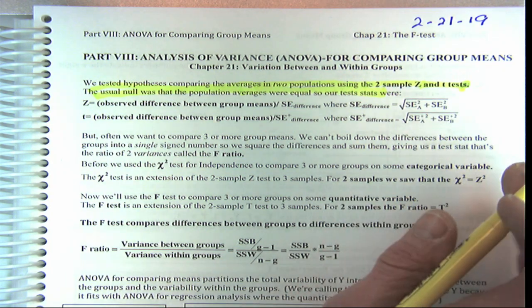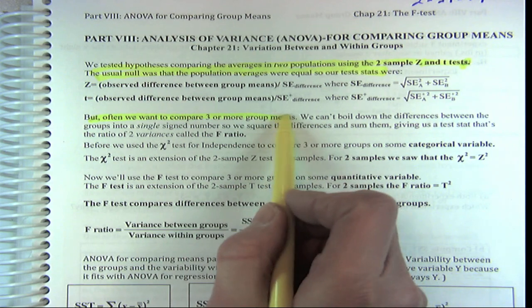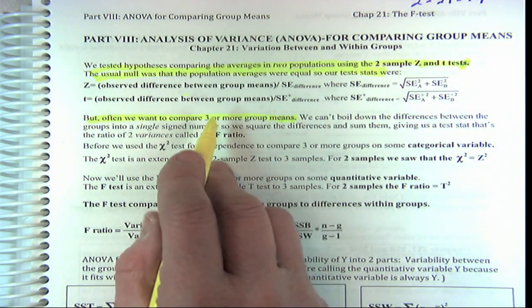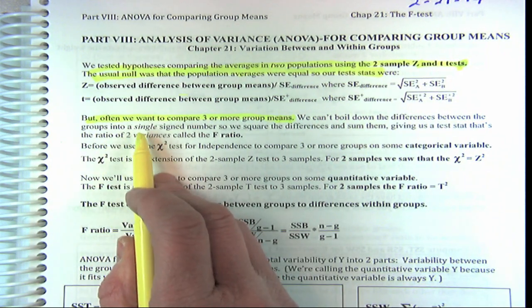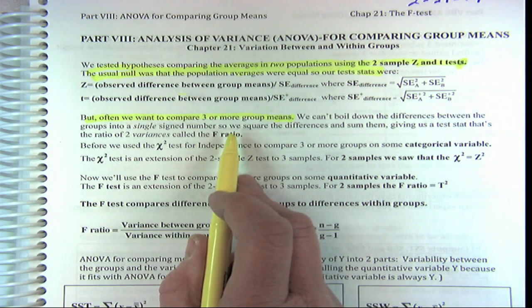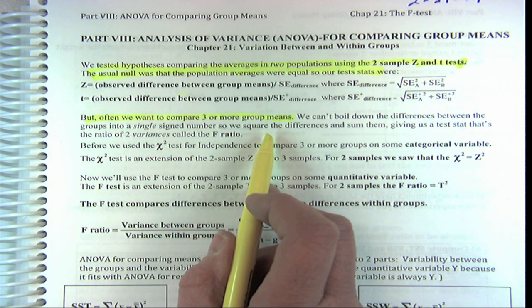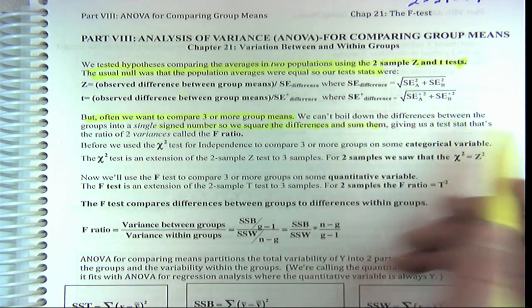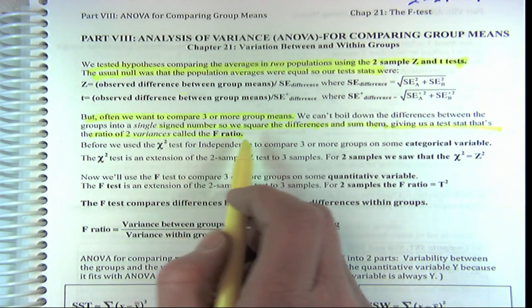The z statistic was the difference between the group means minus the expected zero, over the standard error for the difference. The t was the same thing under those conditions — most importantly, when we didn't know sigma. Now, if we want to compare three group means, we can't boil down the differences between three or more groups into a single signed number, so we square the differences.